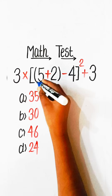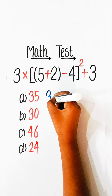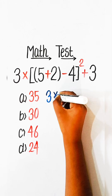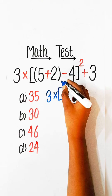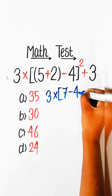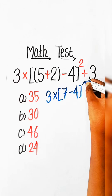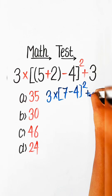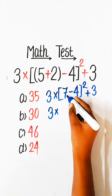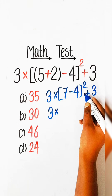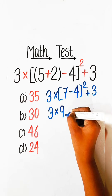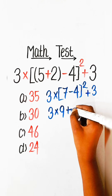Firstly, we have to solve the bracket part. So we write: 3 multiply by — 5 plus 2 is 7 — minus 4 squared plus 3. Then 7 minus 4 is 3, and 3 squared is 9.